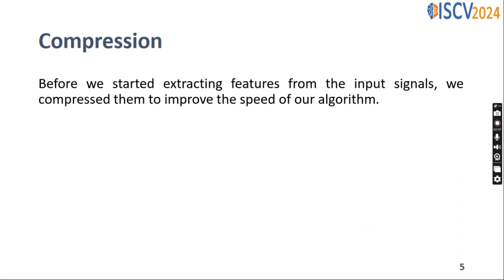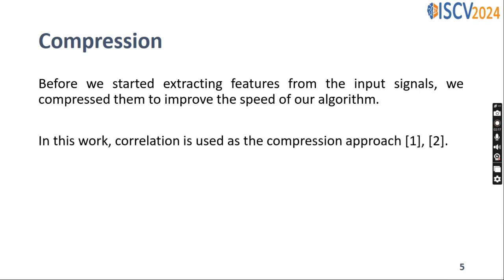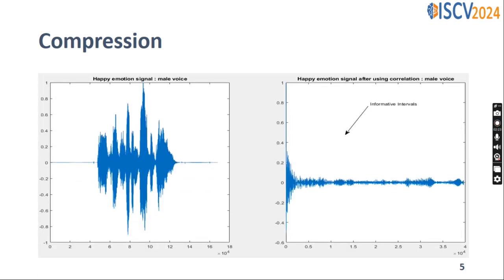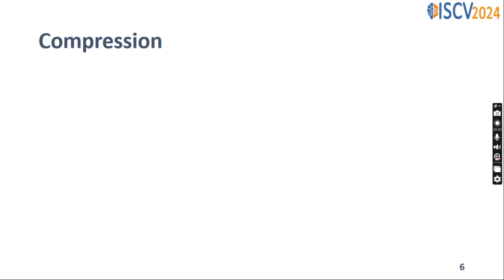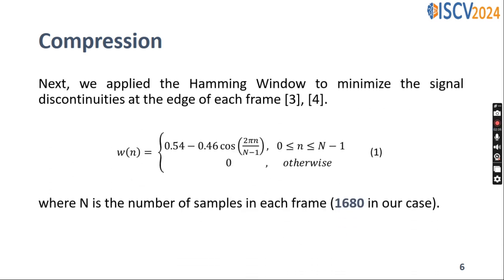Before we start extracting features from the input signals, we compress them to improve the speed of our algorithm. In this work, correlation is used as the compression approach. The following figure shows the signal before and after using correlation, taking as an example a happy emotion signal. Next, we apply the Hanning window to minimize the signal discontinuities at the edge of each frame.